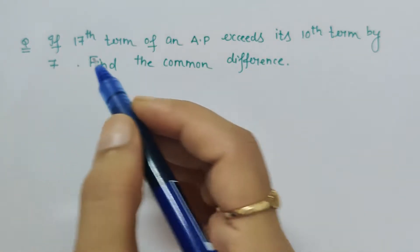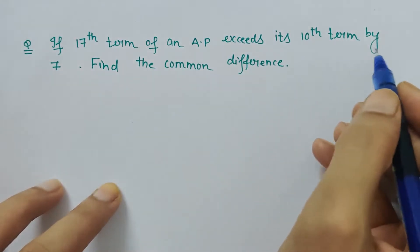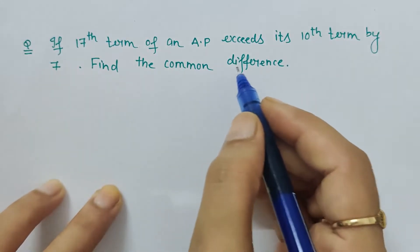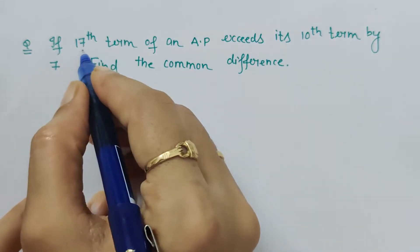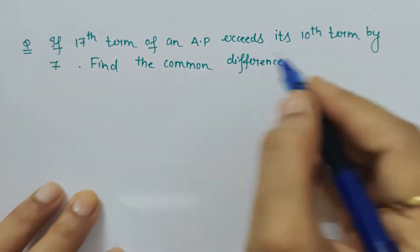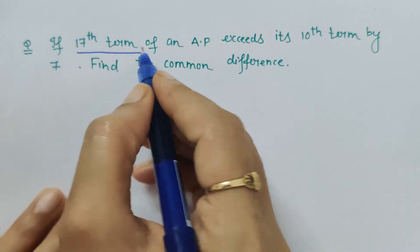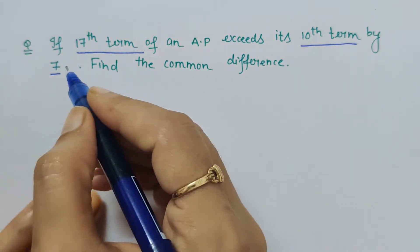Hello friends, let's solve this question. If the 17th term of an AP exceeds its 10th term by 7, find the common difference. This is the question. So how to be done? Let's write the equation as per the question. If the 17th term of an AP exceeds its 10th term by 7...